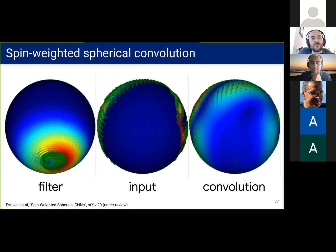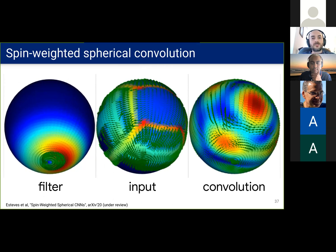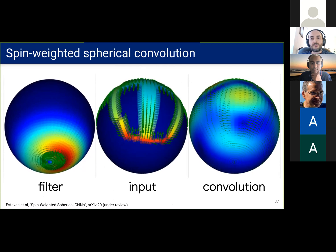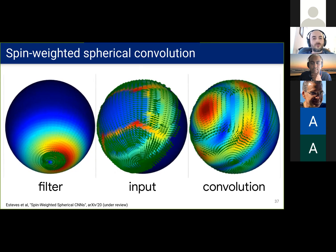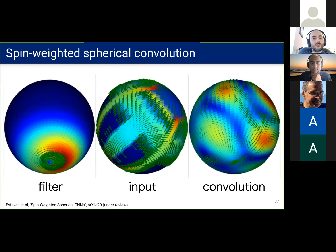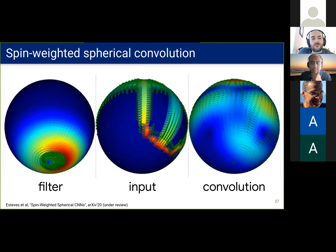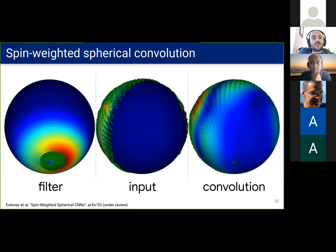And this is what it looks like in the spatial domain. The spin-zero component is a standard spherical function which we represent with colors. Notice how the filter is no longer isotropic. We show the spin-one component as a vector field. Now this highlights another advantage of our method.